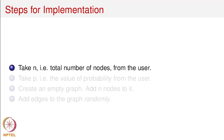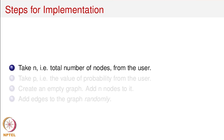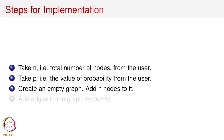Let's look at the steps for the implementation. There are two parameters required: N and p, where N is the total number of nodes and p is the probability value. We take both N and p as input from the user. Initially the network has only nodes, so we take an empty graph and add N nodes to it, with no edges in the network as of now. Edges will be added randomly.